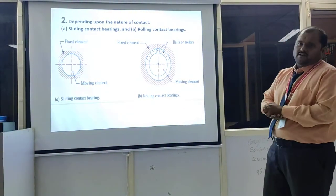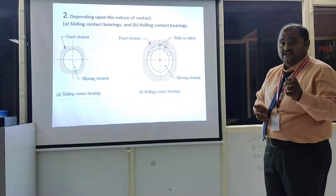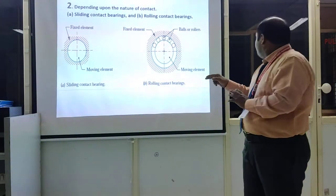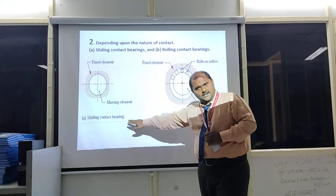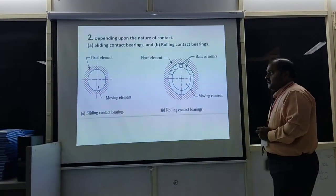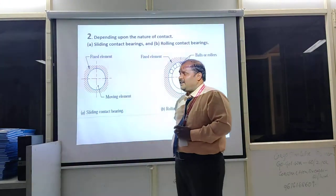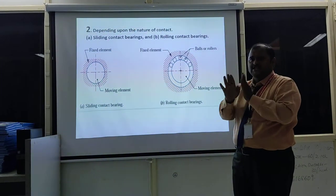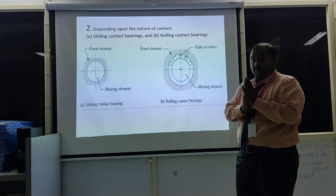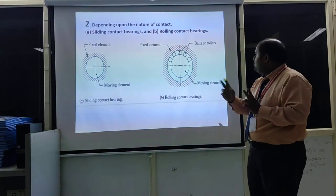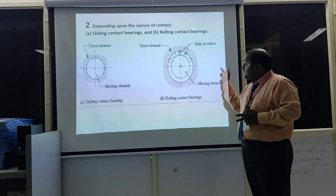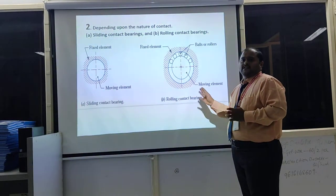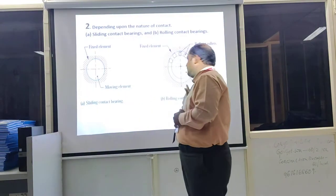Depending upon the nature of contact, there are two types of bearings: sliding contact bearing and rolling contact bearing. In a sliding contact bearing, there is no lubricant film present between the two sliding parts. In a rolling contact bearing, balls or rollers are present between the journal and the bearing. That is the major difference between sliding contact bearing and rolling contact bearing.